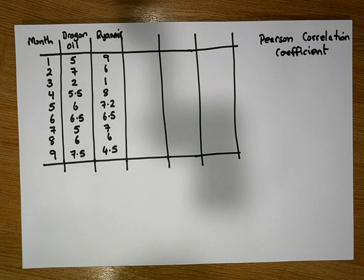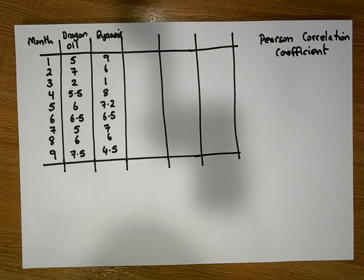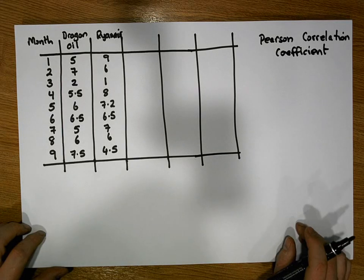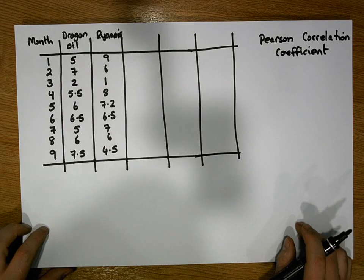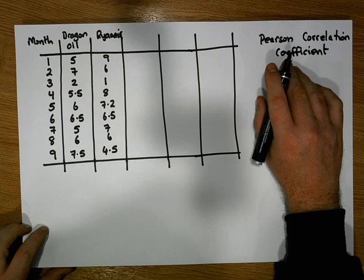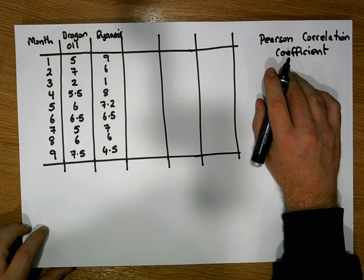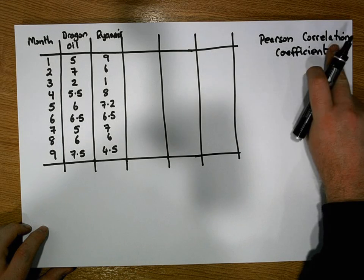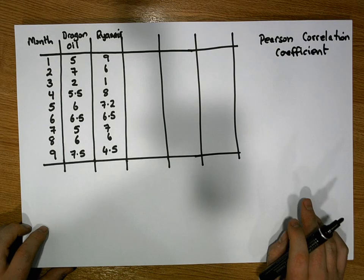Hi guys, this is Jonathan Lambert with the Mathematics Development and Support Office at the National College of Ireland. This short video is going to detail how to calculate the Pearson Product Moment Correlation Coefficient, or simply the Pearson Correlation Coefficient.